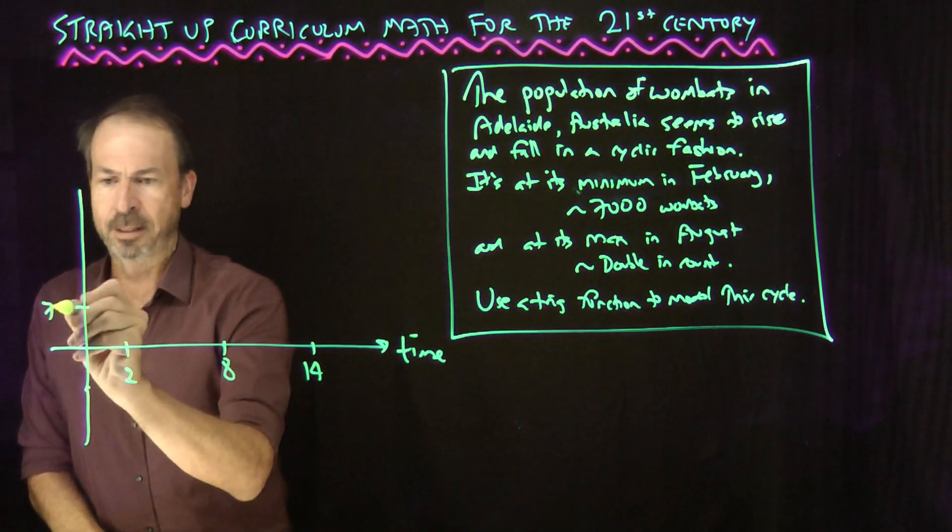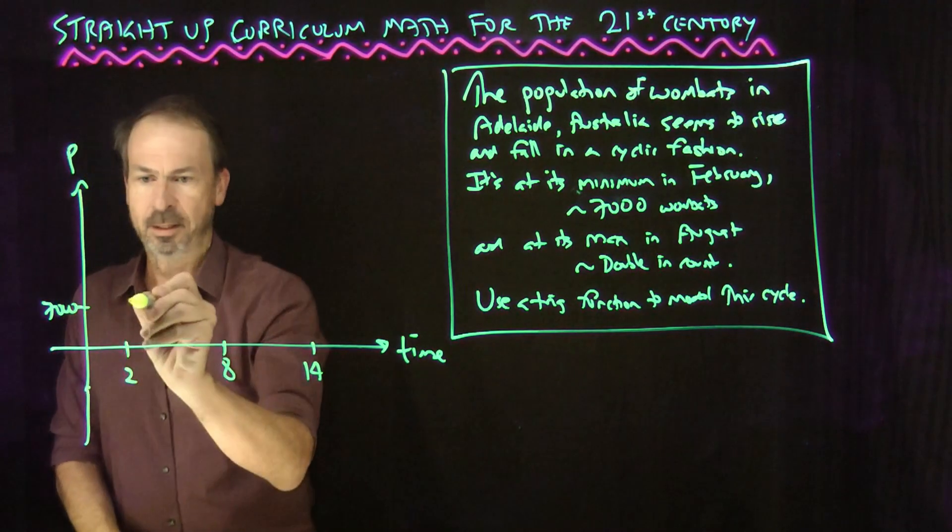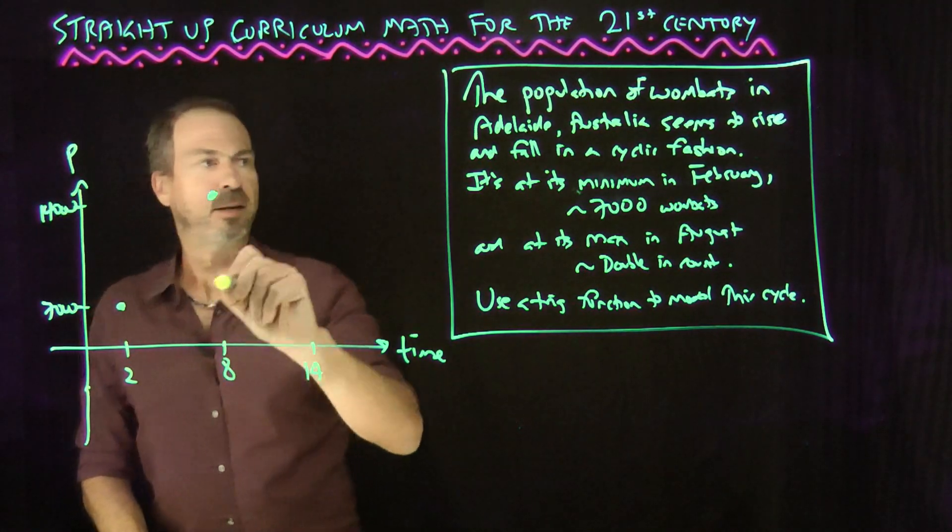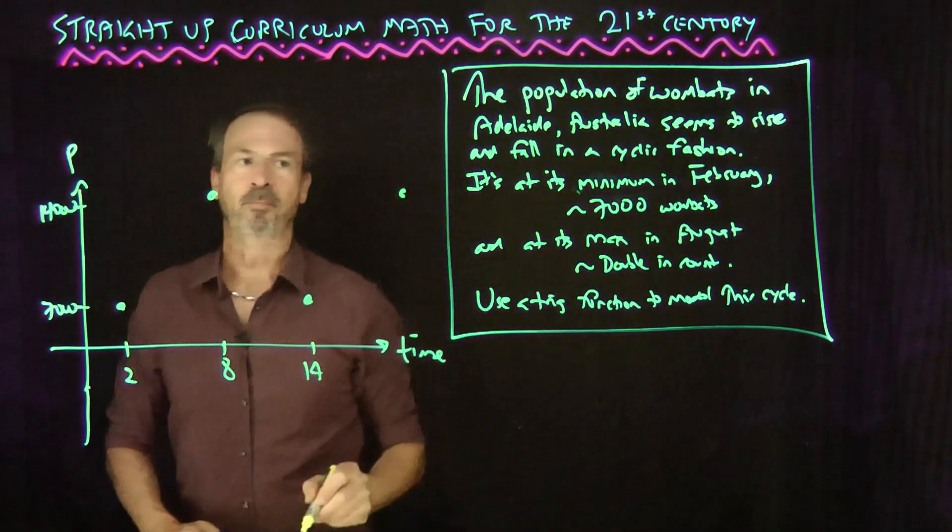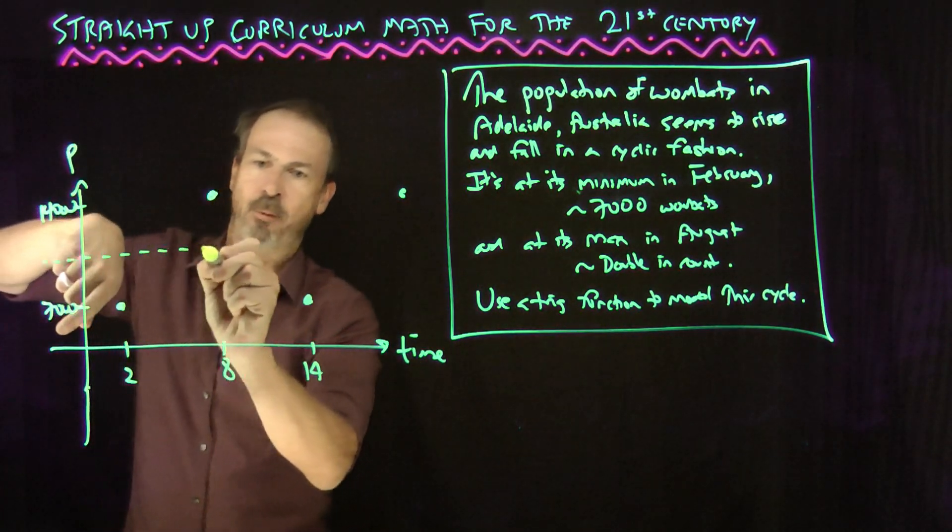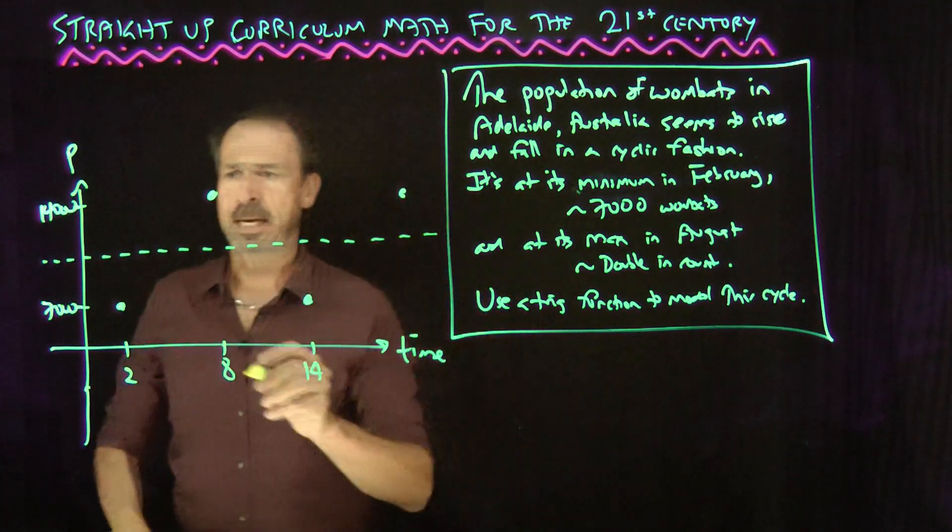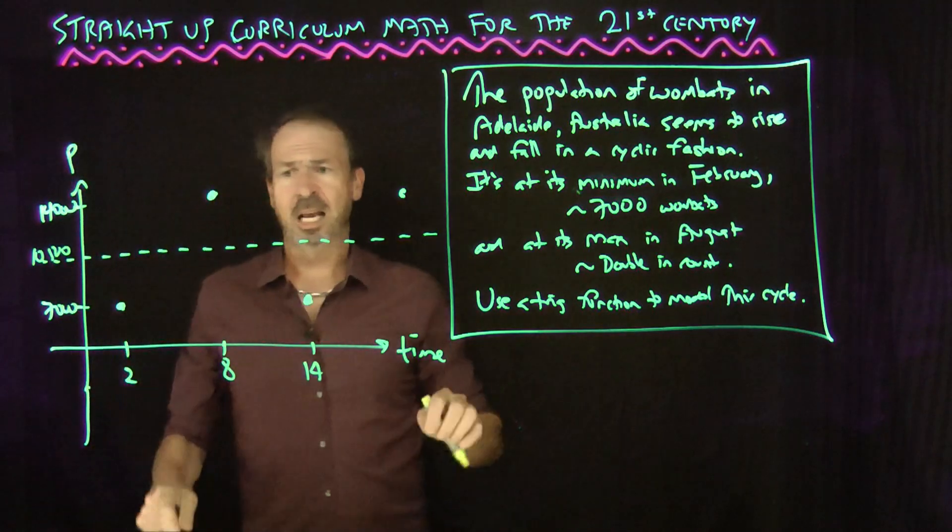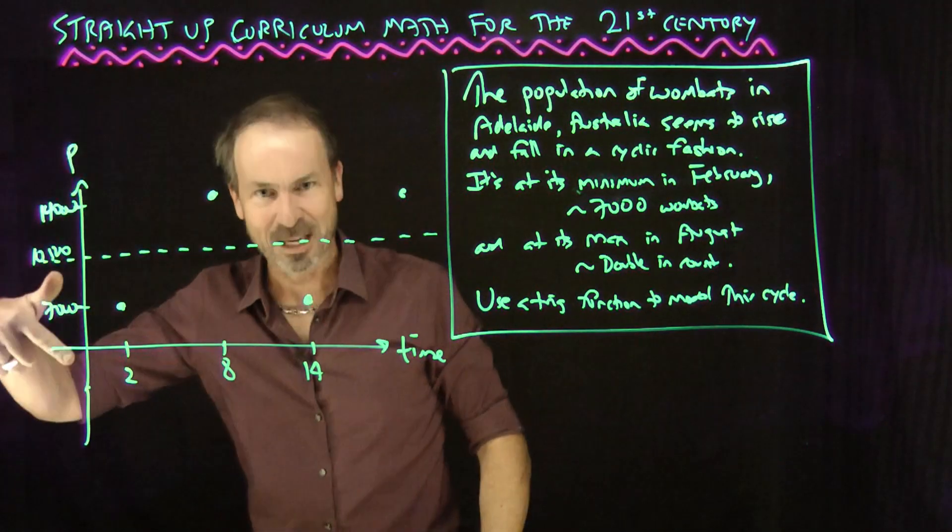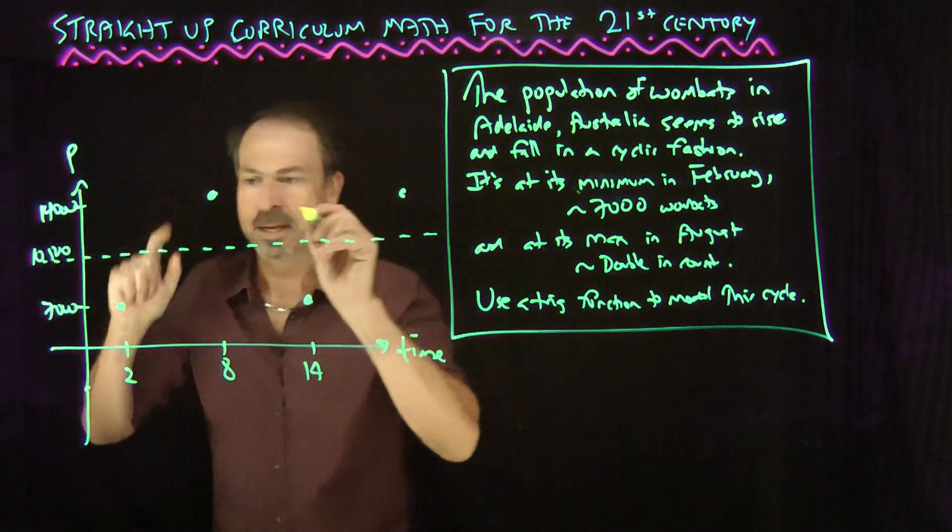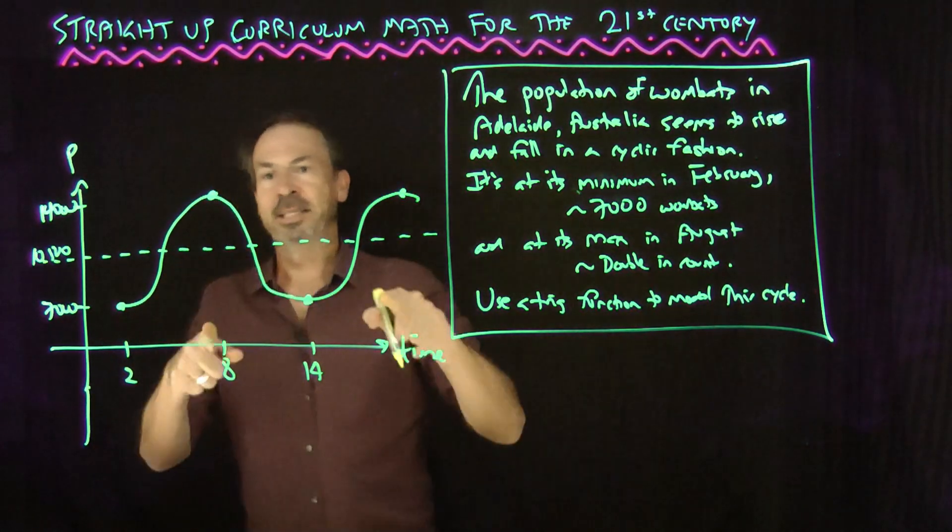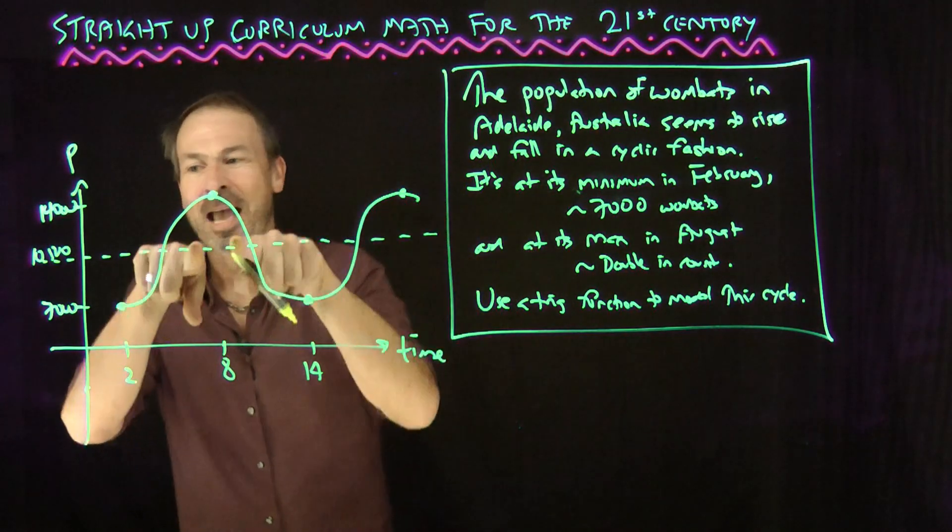At month two, February, it's 7,000. Six months later is August month eight, and it's 14,000. Another six months later it'll be month 14, which is February again. So it seems like we're oscillating 3,500 up, 3,500 down, about that middle line of 10,500. So I want to use a trig function to model this data.